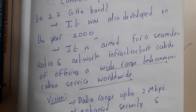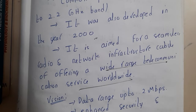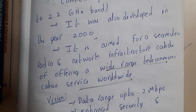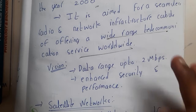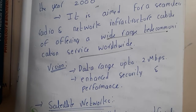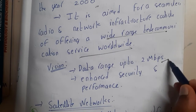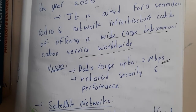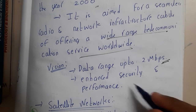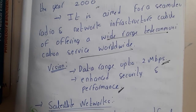This service is mainly meant for long distance calls. In movies or in some books you might have heard about trunk calls — this is a type of trunk call, where from one place you can call a far place. The main feature of IMT 2000 is that it also supports a network data transfer rate of up to 2 Mbps.